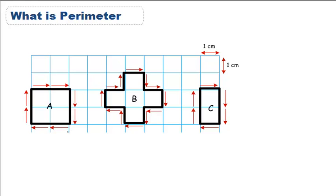In this case, since it's on a grid, we just need to count. The distance around A is 1, 2, 3, 4, 5, 6, 7, 8. So our perimeter of A is 8.